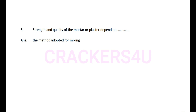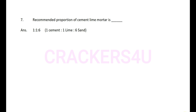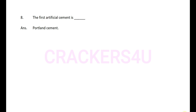Question 6: Strength and quality of mortar or plaster depend on — answer: the method adopted for mixing. Question 7: The recommended proportion of cement lime mortar is — answer: 1:2:6 — one cement, one lime, and six sand.